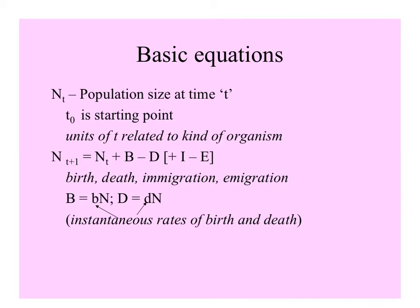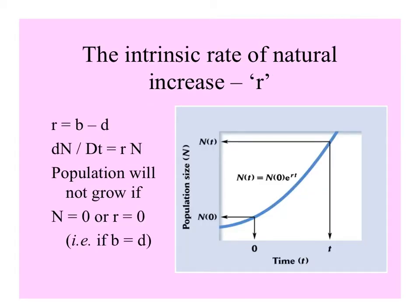The numbers of births and deaths are those instantaneous rates times the size of the population. We can define little r as the birth rate minus the death rate — it is a rate itself, the intrinsic rate of natural increase. The change in population size with respect to time, dN/dt, is equal to little r times the population size. On this figure with time on the x-axis and size on the y-axis, the population increases exponentially, described by the equation N(t) = N(0) × e^(rt), where e is the base of the natural logarithm.